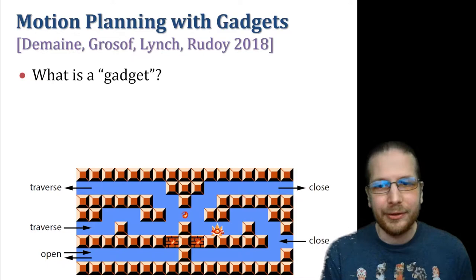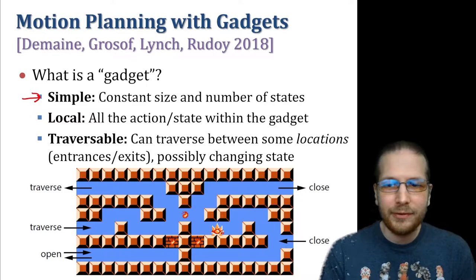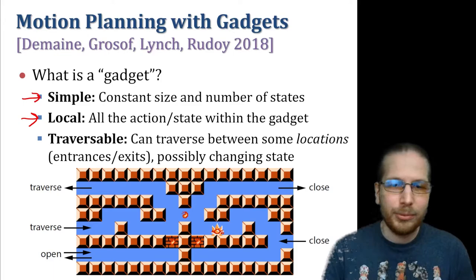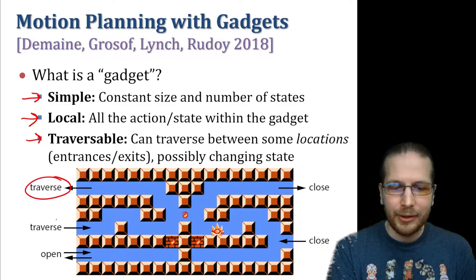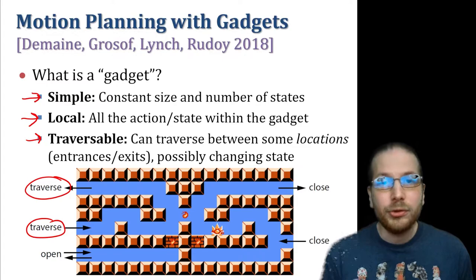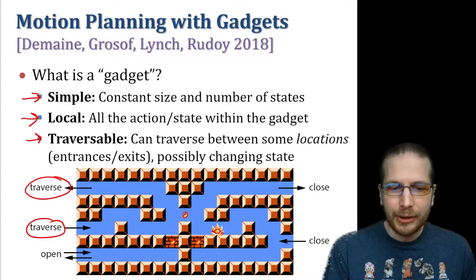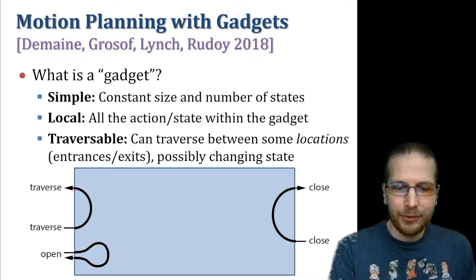We'd like to generalize from this one picture to what is a gadget in general. We formalize it as: the gadget is simple — constant size and constant number of local states. All state in the construction is within a gadget, so each gadget is local with no long-distance communication. There are some locations and different traversals between those locations, and when you do those traversals they may change the state of the gadget.